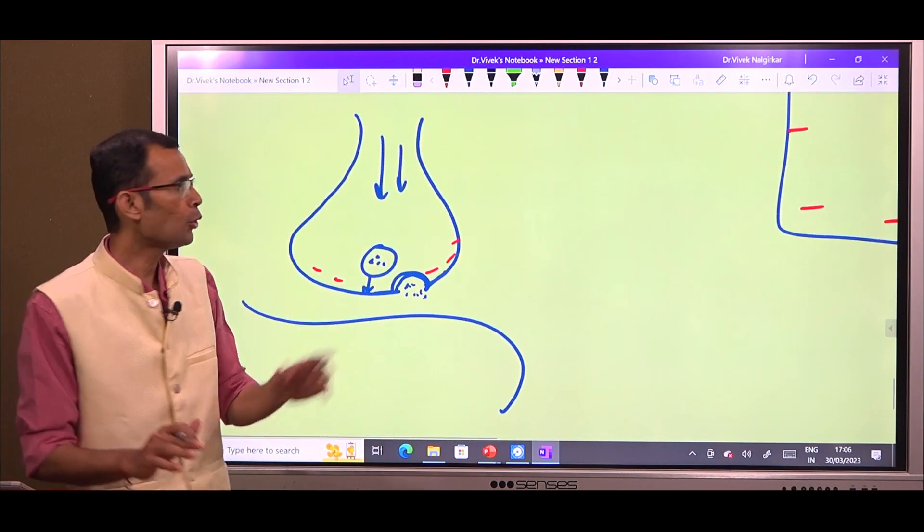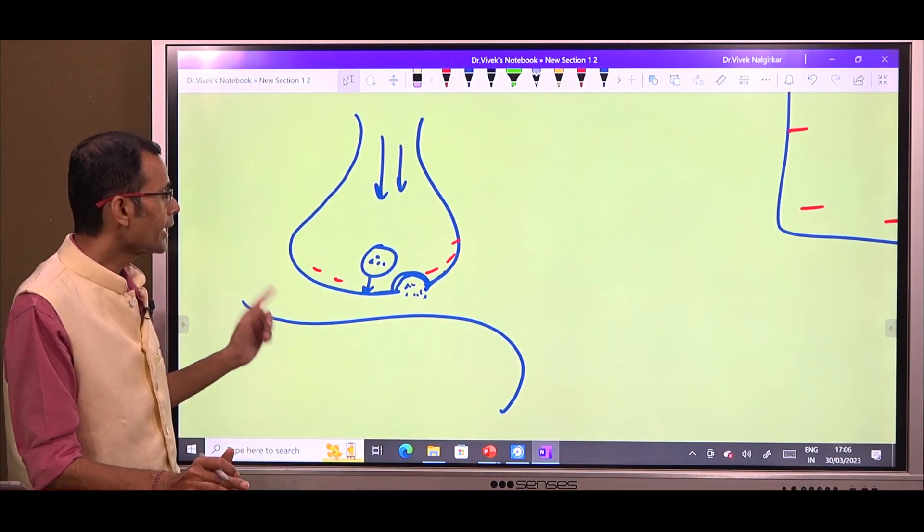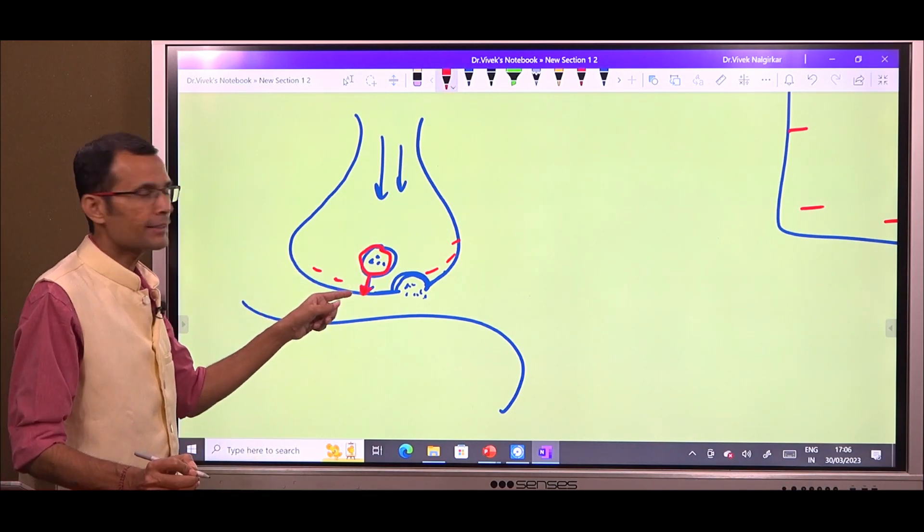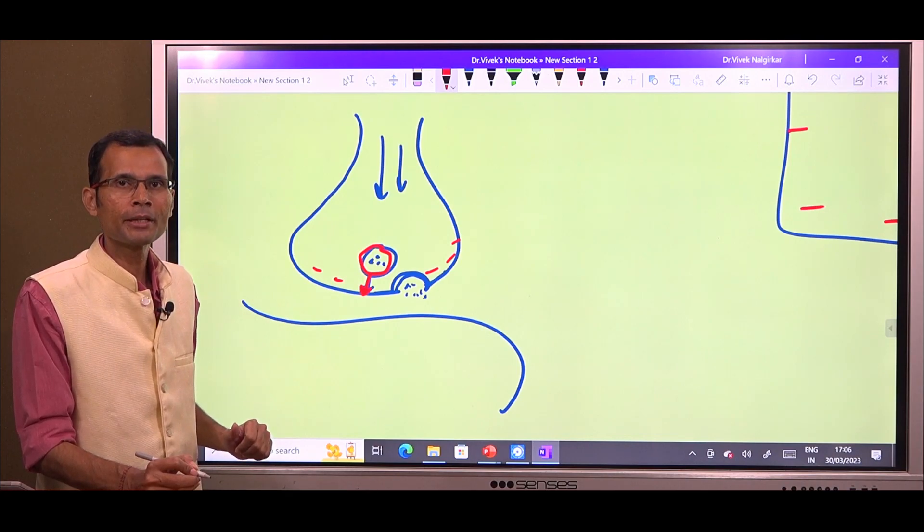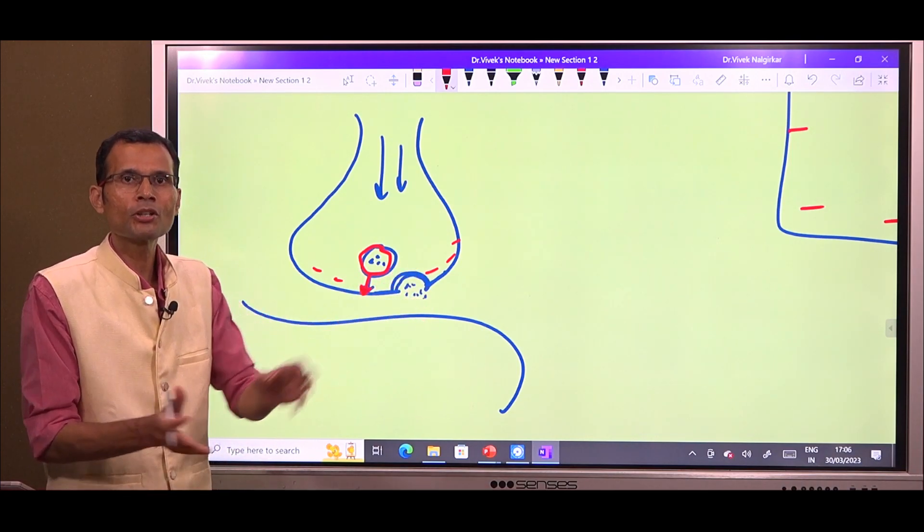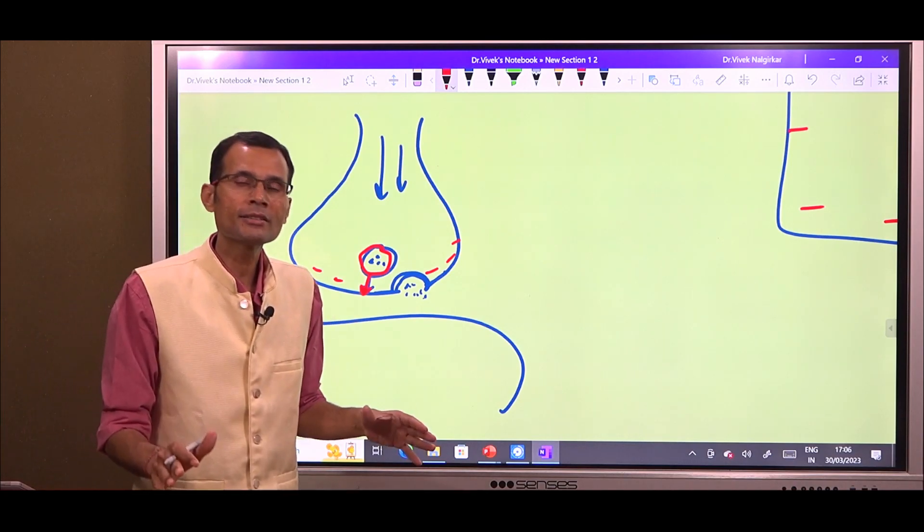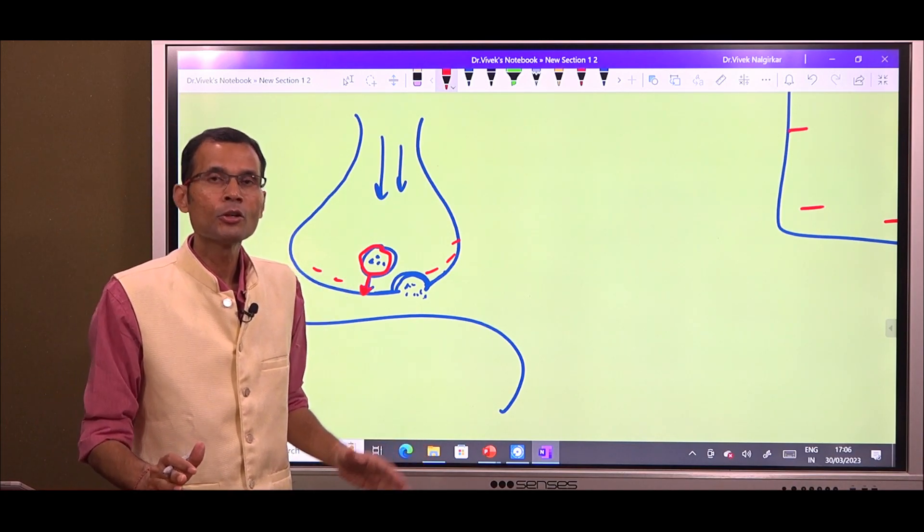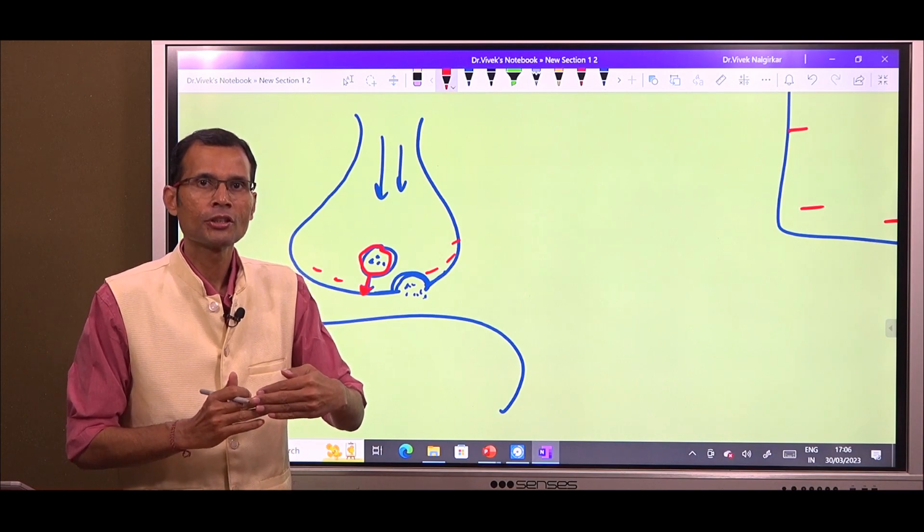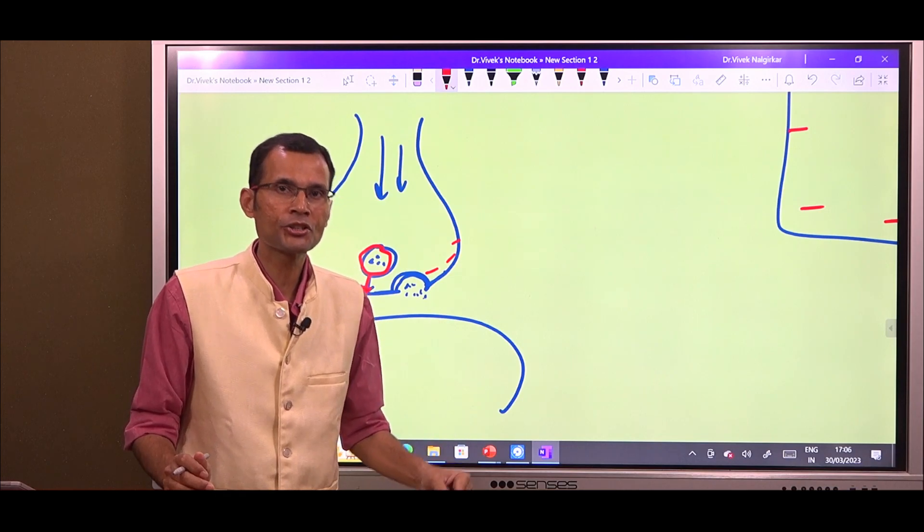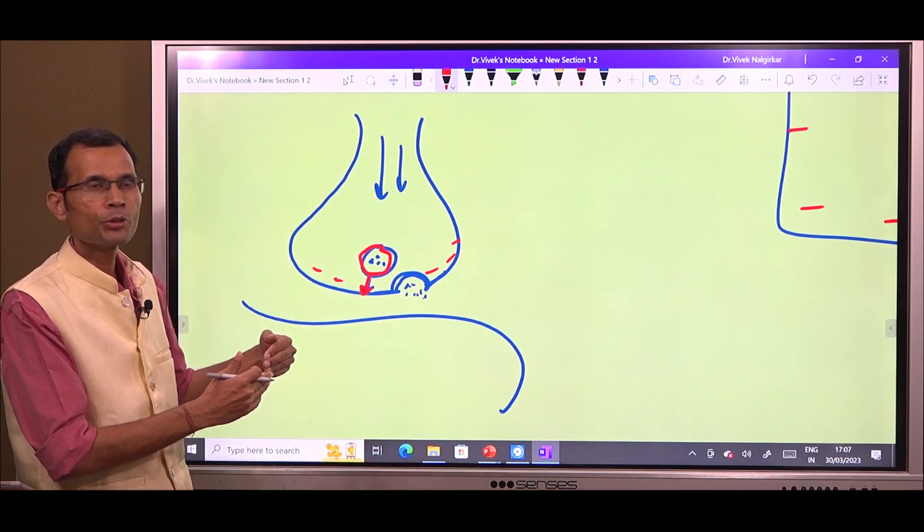So, if both are negatively charged, then how come this vesicle can move towards the presynaptic membrane and fuse with the membrane? They will repel each other because both are negatively charged. That means, there has to be someone who creates a bridge between the two membranes. Someone who is going to create the bridge between the two membranes.